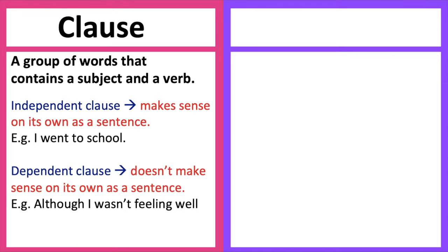Therefore, we can add an independent clause to complete the sentence. Like this. Although I wasn't feeling well, I went to school. So here, we have a dependent clause followed by an independent clause.